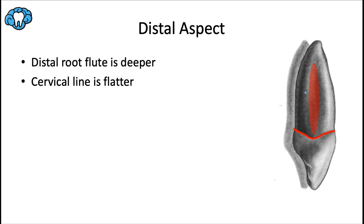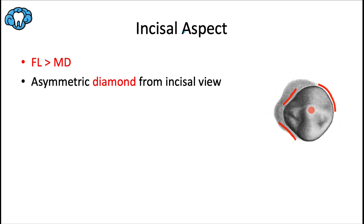From the distal aspect, the distal root flute is a bit deeper than the mesial one, and the CEJ or cervical line is about one millimeter flatter than on the mesial aspect — a trend seen in all teeth covered so far. The concavity at the CEJ area and the distal bulge are also appreciable from this view. From the incisal aspect, the faciolingual dimension is just a little bit bigger than the mesiodistal dimension, and the tooth appears as an asymmetric diamond. It's also the widest anterior tooth faciolingually.